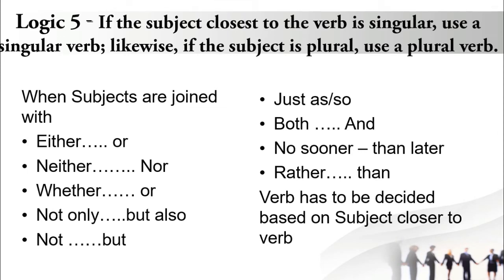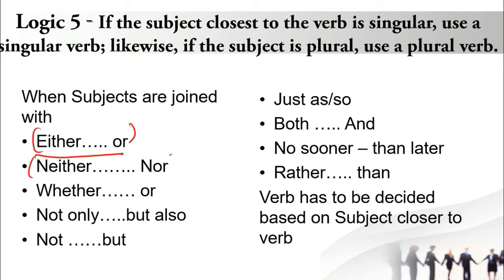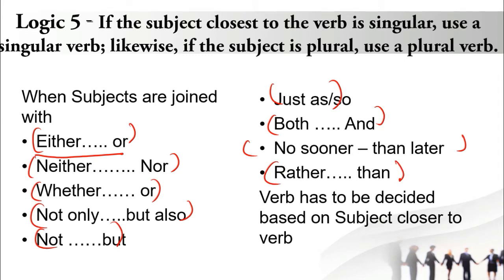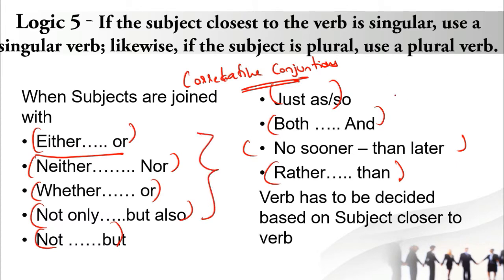Logic 5 is one of the most important ones in subject-verb agreement. In many competitive examinations, one question on this particular concept is always a must. It says whenever the subjects in a sentence are joined with either/or, neither/nor, whether or not, not only/but also, both/and, just as/so, or just rather than — these are called co-relative conjunctions. Every time you see any of these, you will come up with a situation involving two subjects followed by one verb.